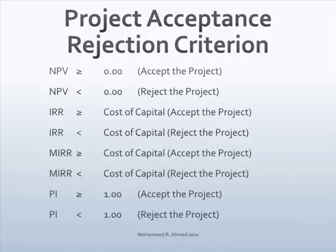Project acceptance or rejection criteria: If net present value is greater than or equal to zero, the project is acceptable. If net present value is less than zero, reject the project. If internal rate of return is greater than or equal to cost of capital, the project is acceptable; if IRR is less than cost of capital, reject the project. If modified internal rate of return is greater than or equal to cost of capital, accept the project; if MIRR is less than cost of capital, reject the project. If profitability index is greater than one, accept the project; if profitability index is less than one, reject the project.